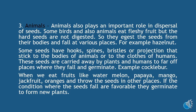Number three: dispersal by animals. Animals also play an important role in dispersal of seeds. Some birds and animals eat fleshy fruit but the hard seeds are not digested, so they eject the seeds from their bodies at various places — for example, hazelnut. Some seeds have hooks, spines, bristles, or projections that stick to the bodies of animals or to the clothes of humans, and are carried away to far places where they fall and germinate — for example, cucumber. When we eat fruits like watermelon, papaya, mango, jackfruit, and oranges and throw the seeds in other places, if the conditions where the seeds fall are favorable they germinate to form new plants. Students, please turn to your book page 56 to see the picture of dispersal by animals.